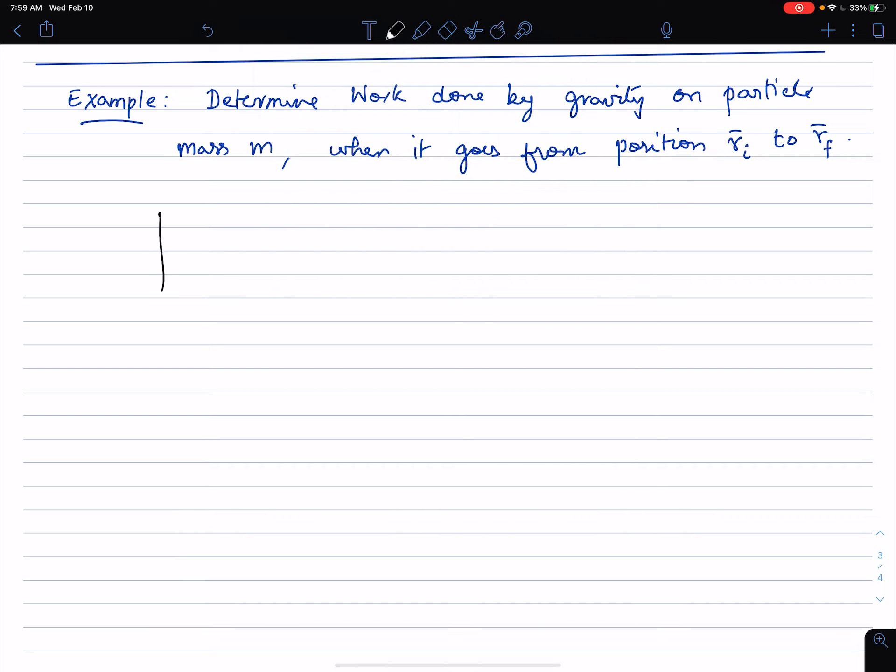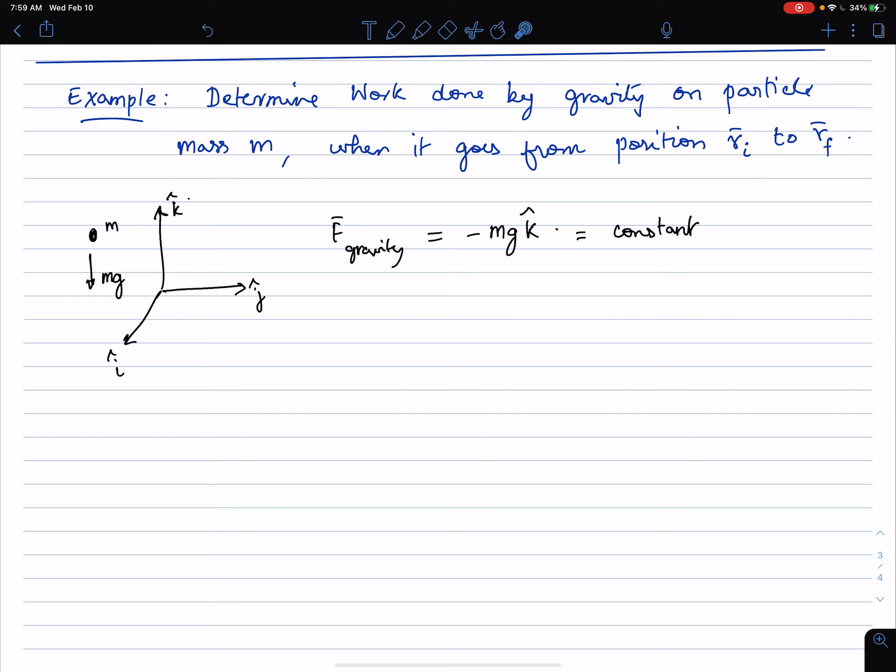We have this three-dimensional coordinate frame, i, j, k, and we have some particle mass m and we have mg acting downwards. The force of gravity, the vector, how do we represent it in this coordinate frame? It's going to be mg times the k direction, but k direction with a negative sign. So we have minus mg k as the gravitational force. And of course, this is a constant because mg is a constant, negative 1 is a constant, and k is a constant unit vector.